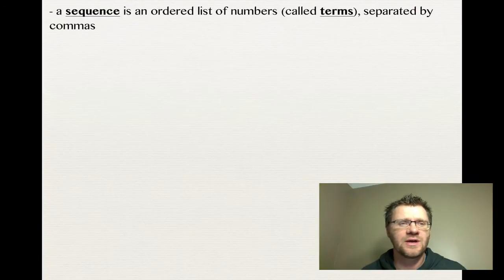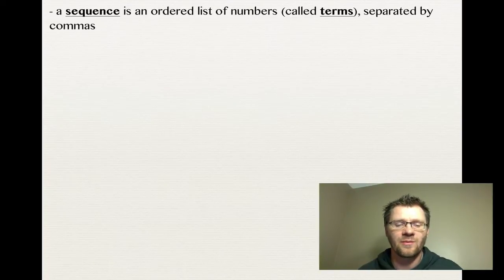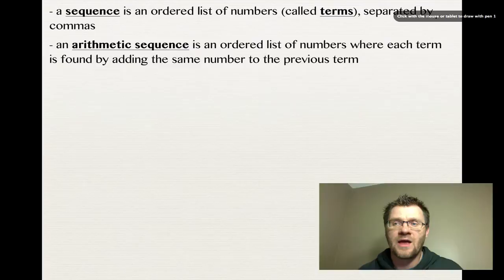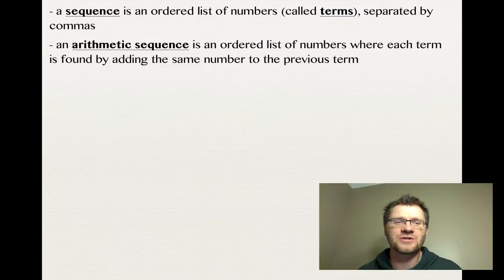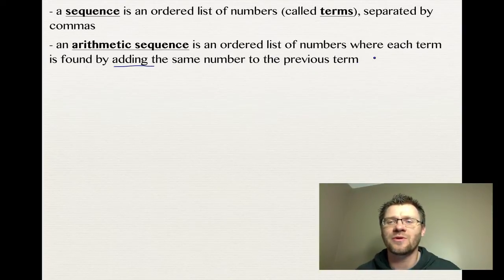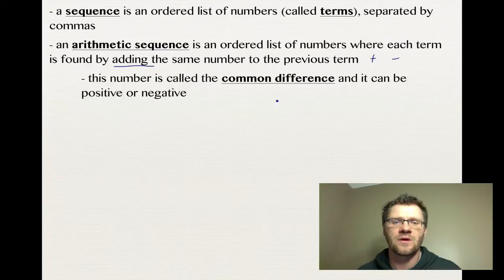A sequence is an ordered list of numbers, which we call terms, separated by commas. An arithmetic sequence is an ordered list of numbers where each term is found by adding the same number to the previous term — and that number could be positive or negative. This number is called the common difference, and as stated, it can be positive or negative.